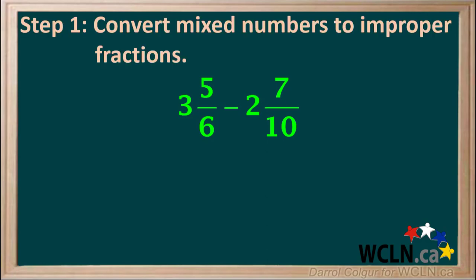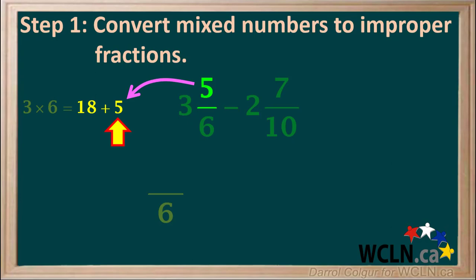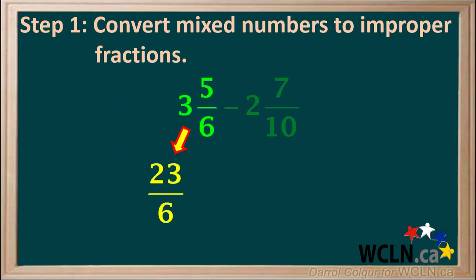Step 1 is to convert mixed numbers to improper fractions. We'll start with 3 and 5 sixths. The denominator of the improper fraction will be 6, the same as the fraction in the mixed number. To get the numerator, we take 3 times 6, which is equal to 18. Then we add the numerator of the fraction, 5, to give us 23. So now we've converted the mixed number 3 and 5 sixths to the improper fraction 23 sixths.